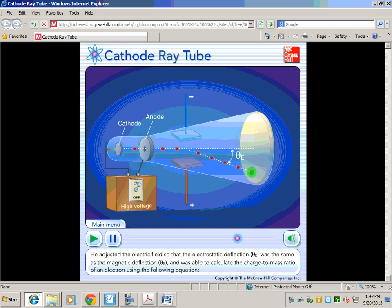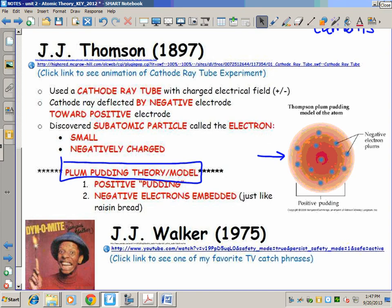Which he then called electrons. He went further and actually discovered the charge to mass ratio of the electron, but we don't need to get into all that. So he's credited with discovering the subatomic particle called the electron—that's huge—and discovering that it was both small and negatively charged. He's not credited quite with knowing really where the electrons were or how they behaved; that came later. So when you hear J.J. Thomson you need to think plum pudding theory or model, and you need to think electrons. He discovered the electron.